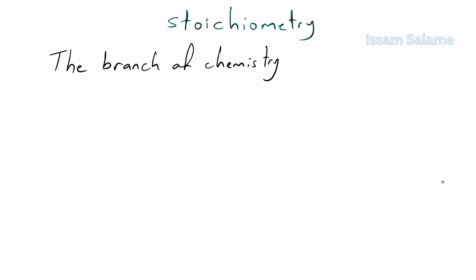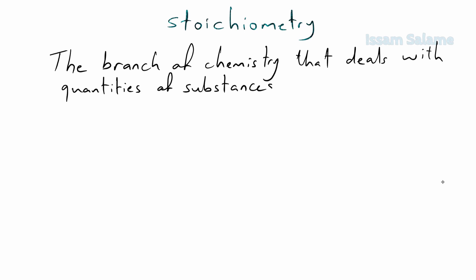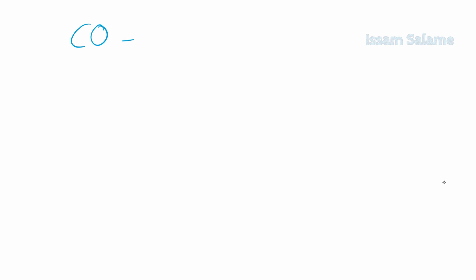Stoichiometry is the branch of chemistry that deals with the quantities of substances in a chemical reaction and how these quantities are related to each other. For example, consider the following reaction between carbon monoxide and iron oxide to produce carbon dioxide and iron. Before we start doing any calculations regarding stoichiometry, keep in mind that you should balance the chemical reaction. Don't worry if you don't know how — I've kept a link in the description.